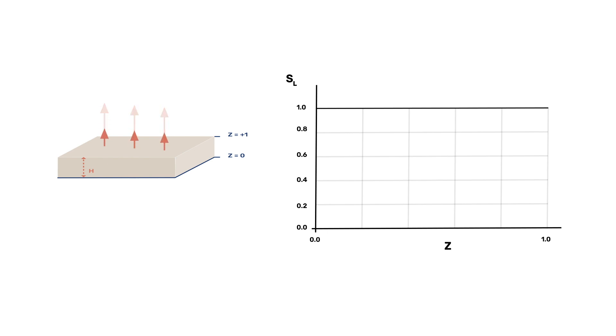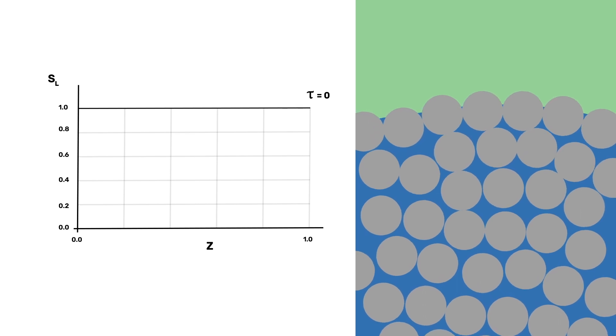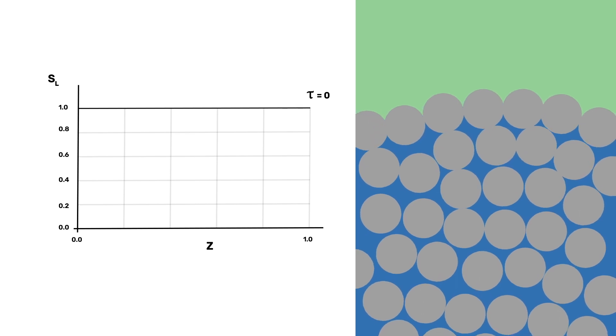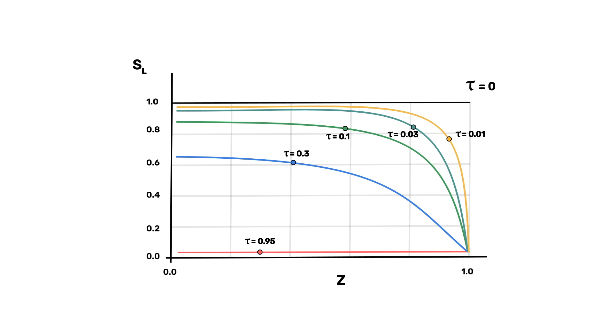We then introduce a dimensionless time tau, which is equal to 0 at the time drying starts, and equal to 1 once the drying is completed. With this in hand, we first consider the case of fast evaporation and or materials with fine pores, making it difficult for water to reach the surface. We thereby obtain the following sequence of profiles as drying progresses. These are steep, showing a sharp drop on the right side where drying takes place.